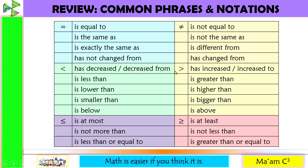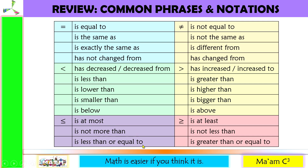The complement is greater than, used when you encounter words such as: has increased or increased to, is greater than, is higher than, is bigger than, or is above. We also have less than or equal to if you encounter words such as: is at most, is not more than, or is less than or equal to. And greater than or equal to if you encounter words such as: is at least, is not less than, or is greater than or equal to.